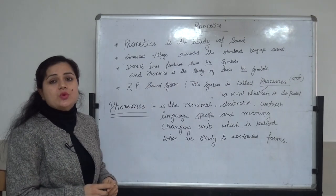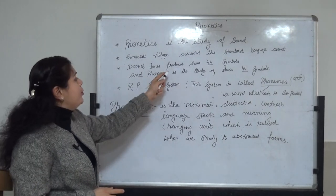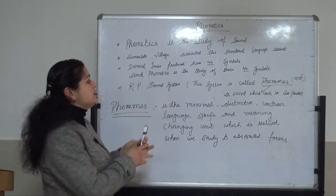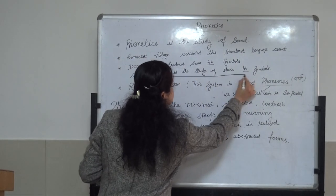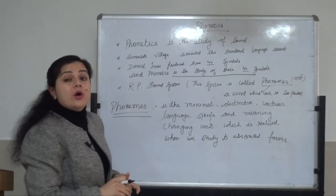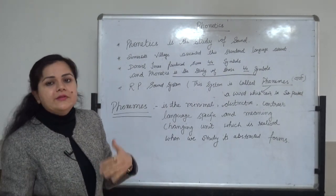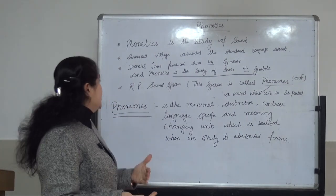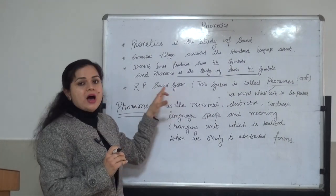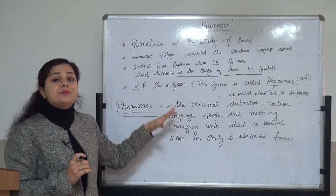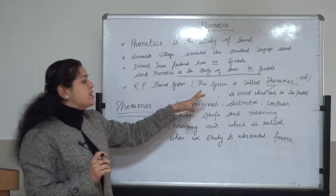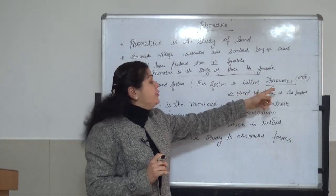Daniel Jones was the first scientist who produced some 44 symbols, and Phonetics is the study of these 44 symbols. Now we are going to read the RP sound system. RP sound system means Received Pronunciation sound system. And this sound system is actually known as the Phoneme.